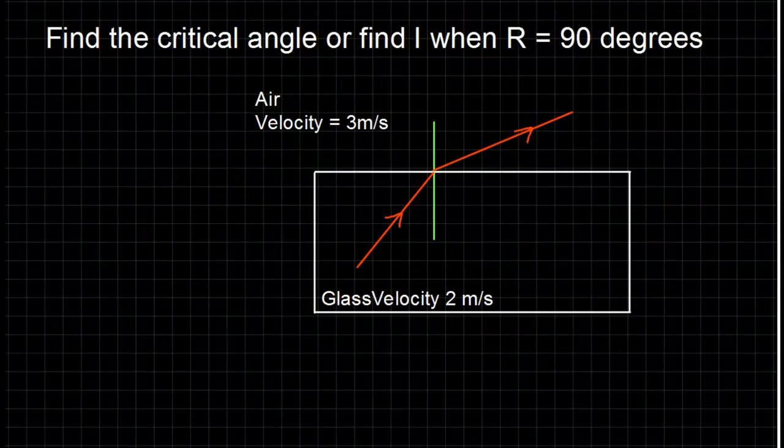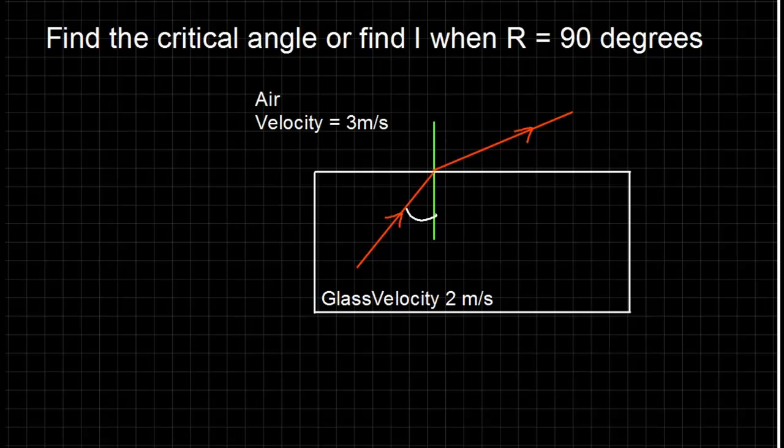Now let's look at some example calculations. If we have to find the critical angle, or find i when the angle of refraction is 90 degrees, we can just use Snell's Law. So write out Snell's Law, substitute the numbers you know into it.